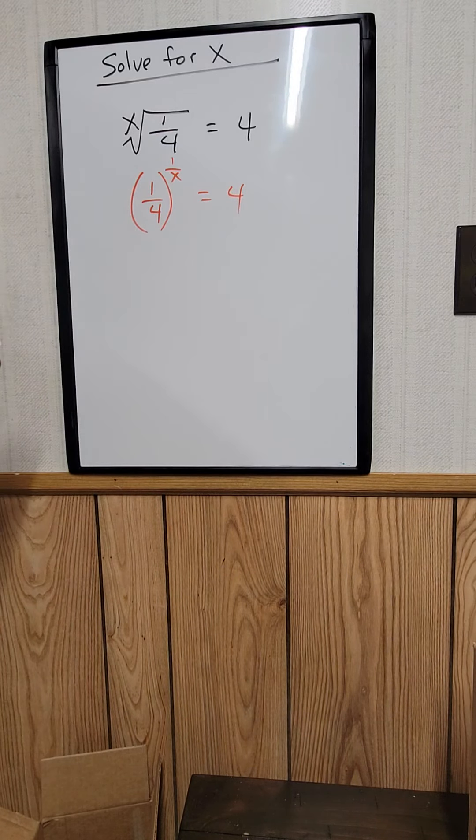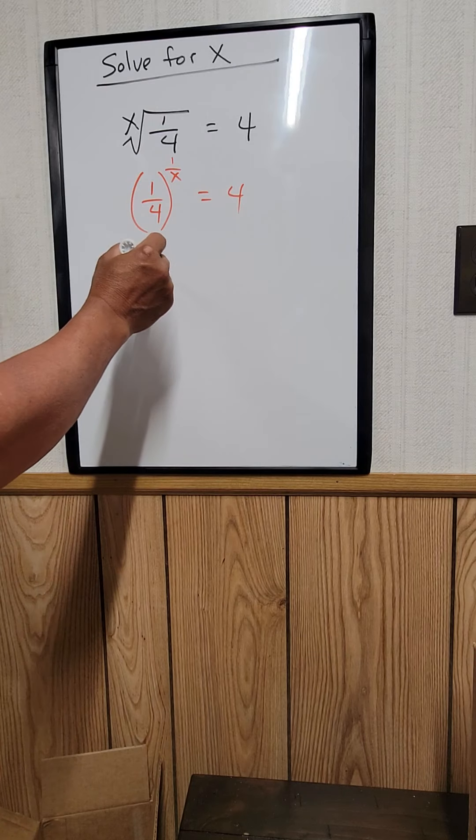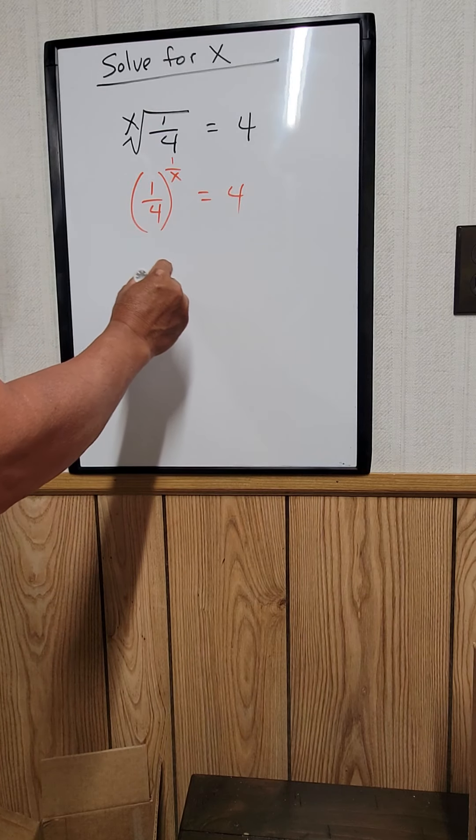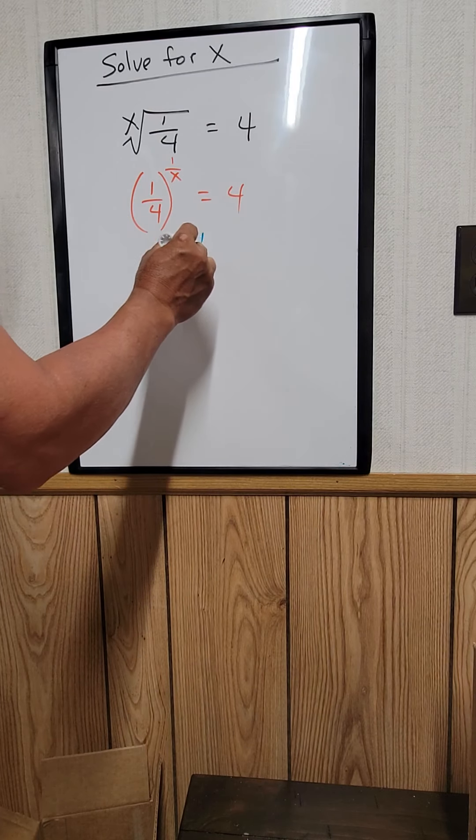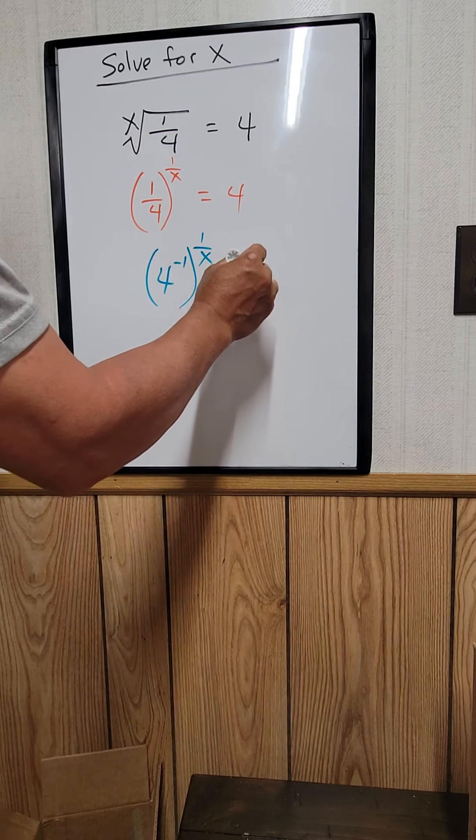And 1 over 4, we can rewrite that as 4 to the negative 1, and the whole thing raised to the power of 1 over x. That's equal to 4.